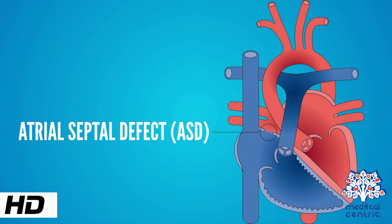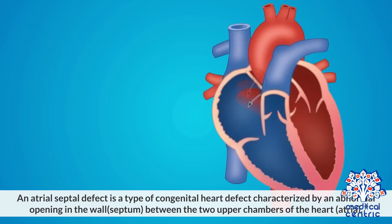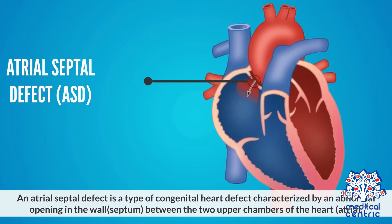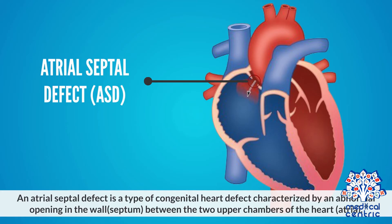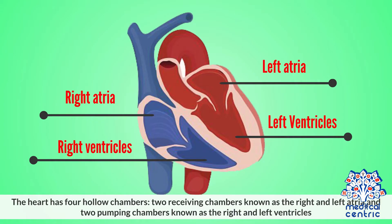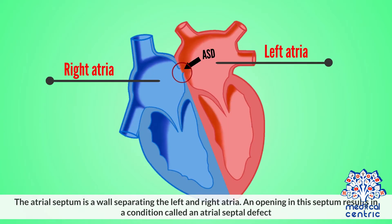Today's topic is atrial septal defect, or ASD. An atrial septal defect is a type of congenital heart defect characterized by an abnormal opening in the wall, or septum, between the two upper chambers of the heart, or atria. The heart has four hollow chambers: two receiving chambers known as the right and left atria, and two pumping chambers known as the right and left ventricles. The atrial septum is a wall separating the left and right atria. An opening in this septum results in a condition called an atrial septal defect.